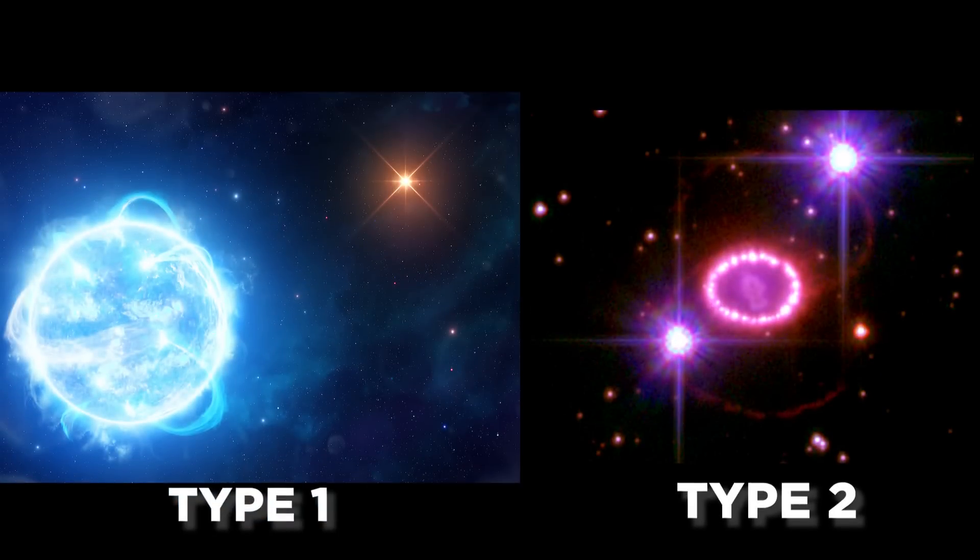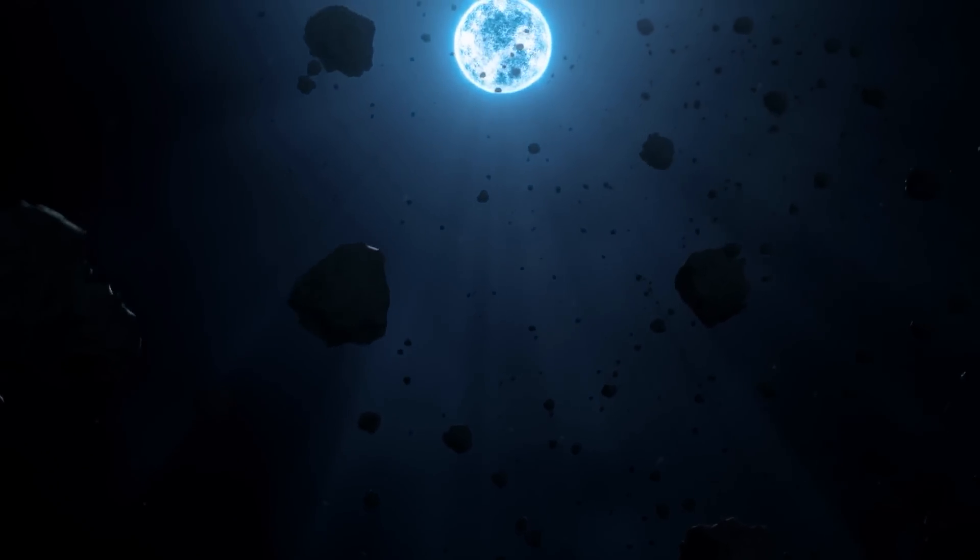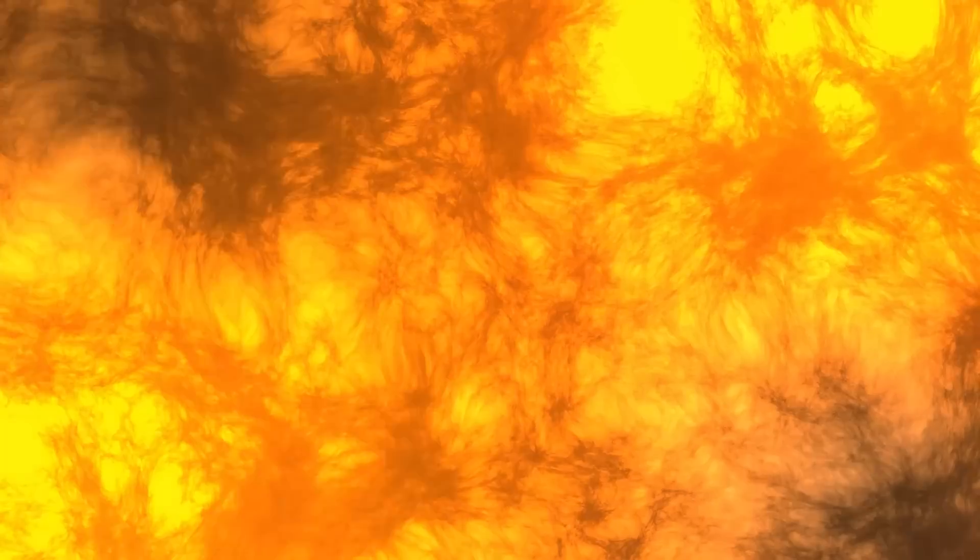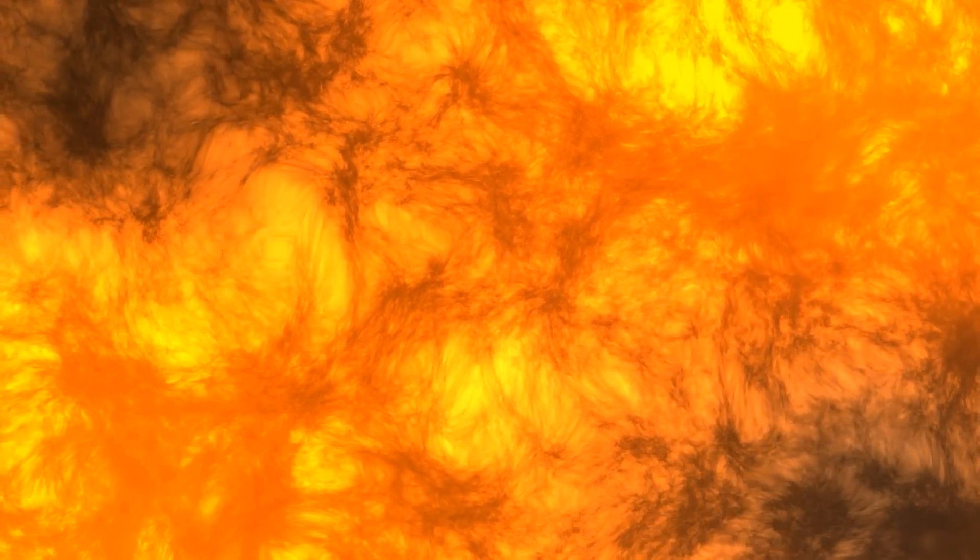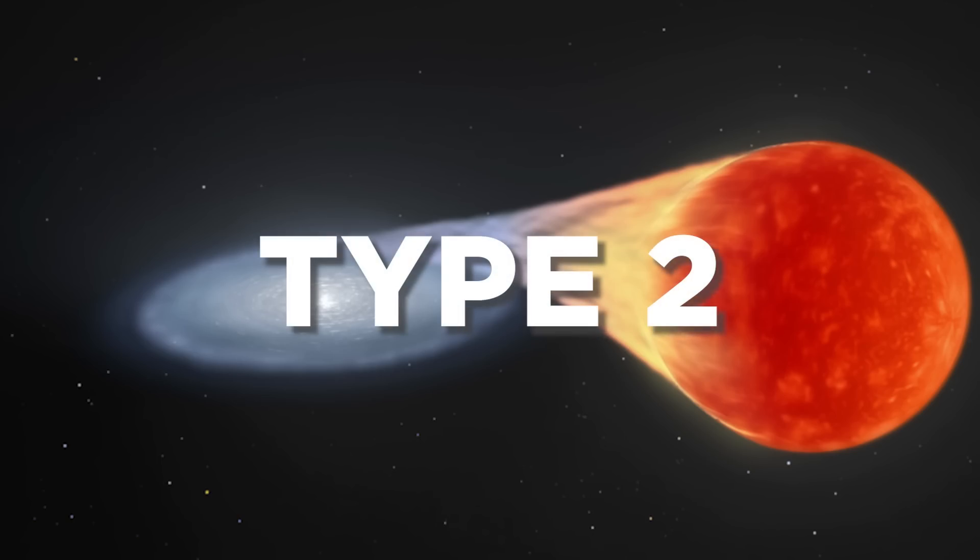Type 1 and Type 2 are the two main types of supernovas. When a white dwarf star, which is the dense remnant of a low-mass star, takes in matter from a companion star until it hits a certain mass, a Type 1 supernova happens. This starts a nuclear fusion process that gets out of hand, which blows up the star. There isn't much time left for the star, and when it bursts, it makes a lot of damage, but nothing compared to Type 2.